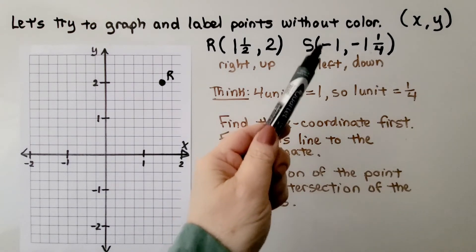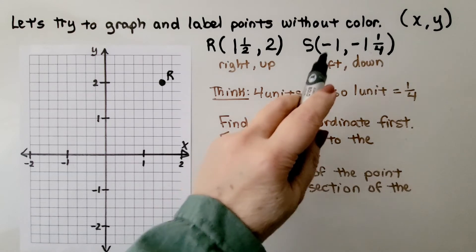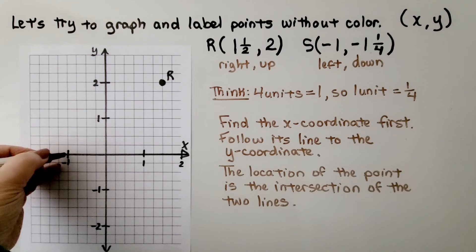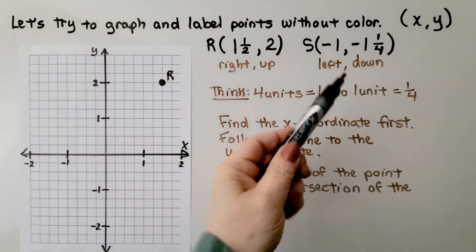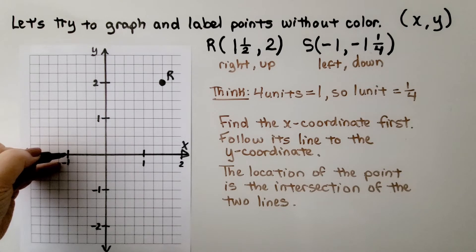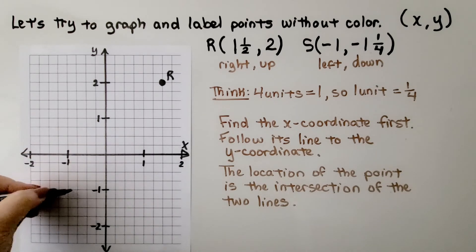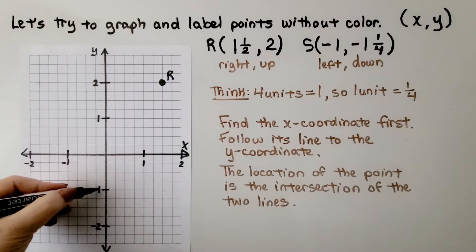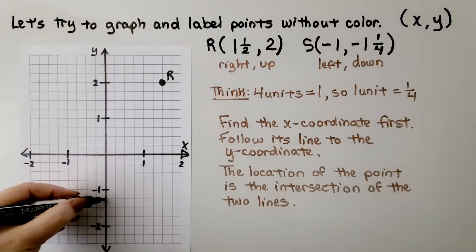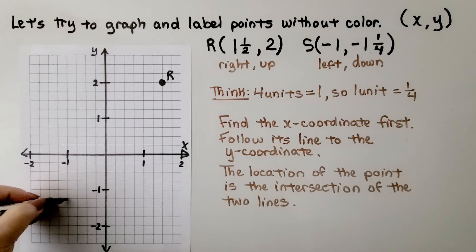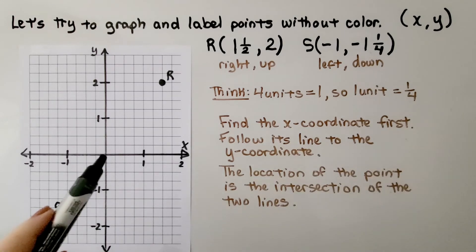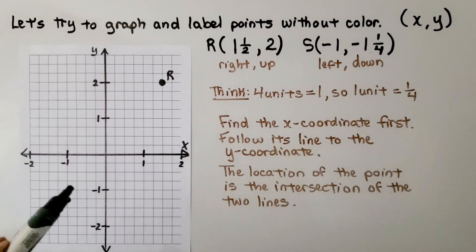For Point S, x is negative one — the first value — so we go left to negative one. The y value is negative one-fourth, so we go down. Here's negative one on y, but we need negative one-and-one-fourth. Between each whole number there are four divisions, so one-fourth is one unit down from negative one. We go to negative one on x and negative one-and-one-fourth on y — that's Point S.